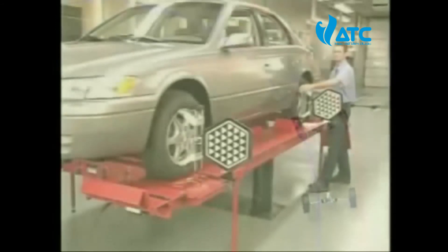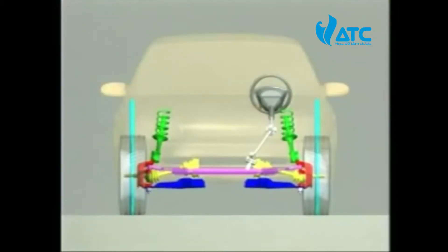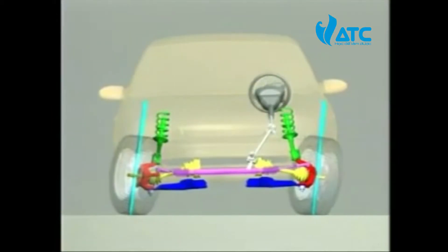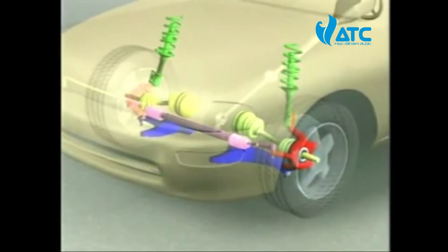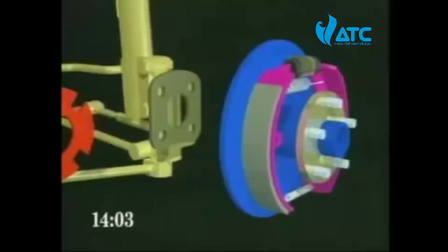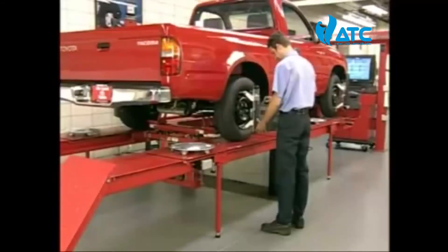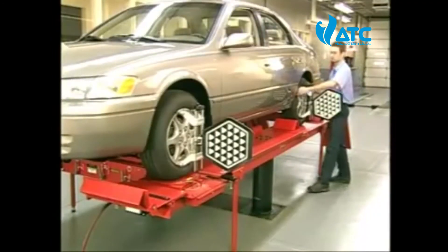Once you've determined which angle is out of alignment and the corrective actions to take, you will need to begin your wheel adjustment procedure. Wheel adjustment procedures are different for most vehicles. There are a variety of adjustment mechanisms including shims, cams, threaded rods, and slotted frames. Refer to the appropriate vehicle service manual for specific procedures.